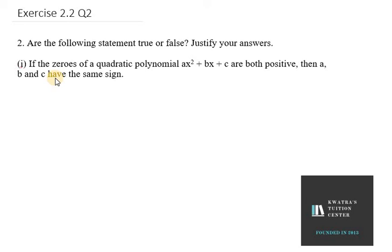In this we need to state true or false and justify your answer. It says if the zeros of a quadratic polynomial ax² + bx + c are both positive, meaning alpha is positive and beta is positive as well, then A, B and C have the same sign.